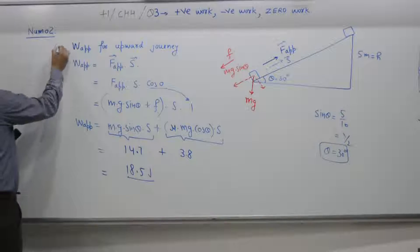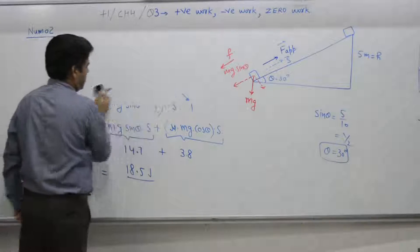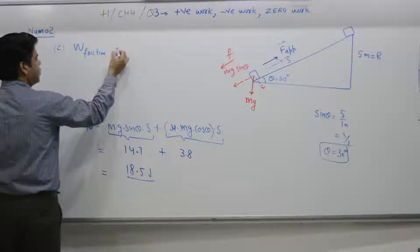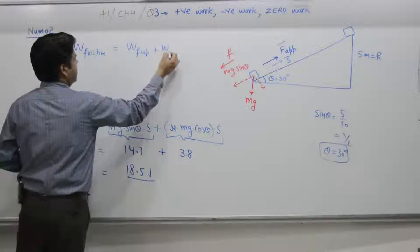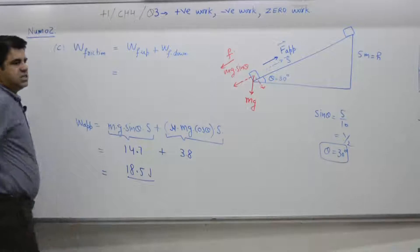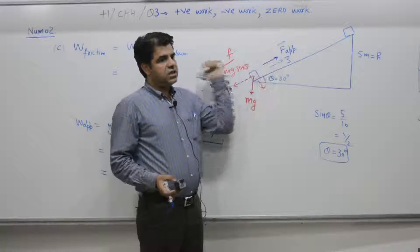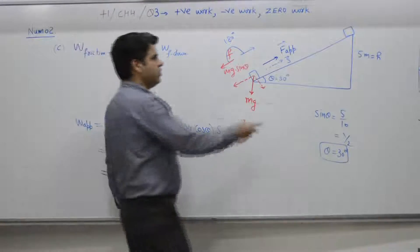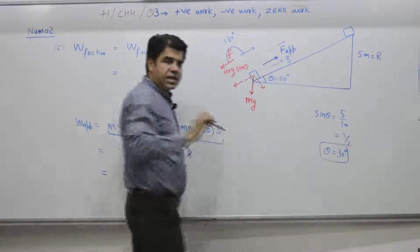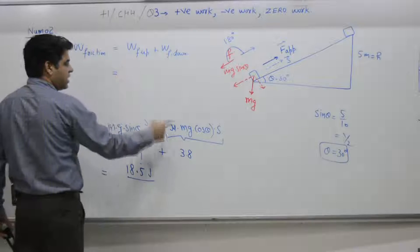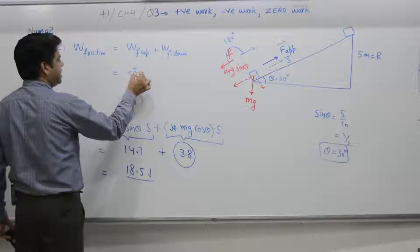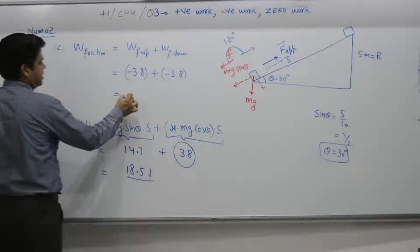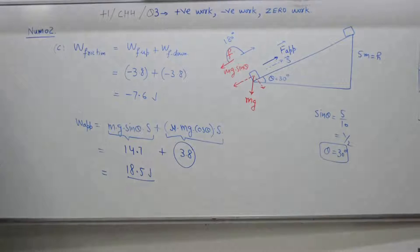Part c: work done by friction over the round trip. Work done by friction equals work done by friction on the upward journey plus work done by friction on the downward journey. When the object moves upwards, friction is downwards — angle between them is 180. When the object moves downwards, friction is upwards — angle is again 180. So for both cases the value is minus 3.8 joules each: minus 3.8 plus minus 3.8 equals minus 7.6 joules total.